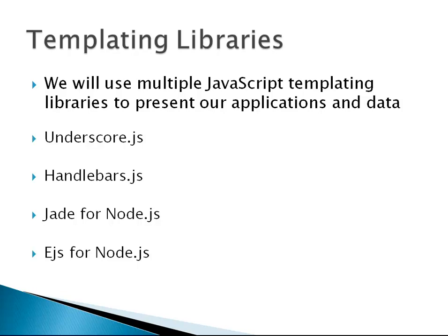For instance, we'll use Underscore.js, which is a dependency for Backbone. Handlebars.js we'll use with Ember. Jade and EJS are both template engine modules for Node, so we'll be looking into those in the Node chapters.